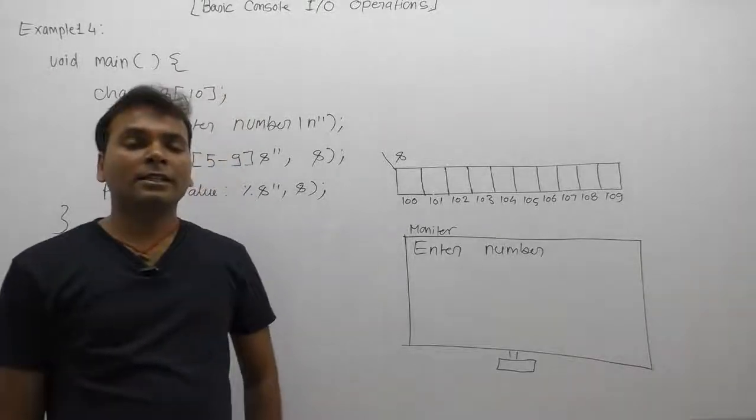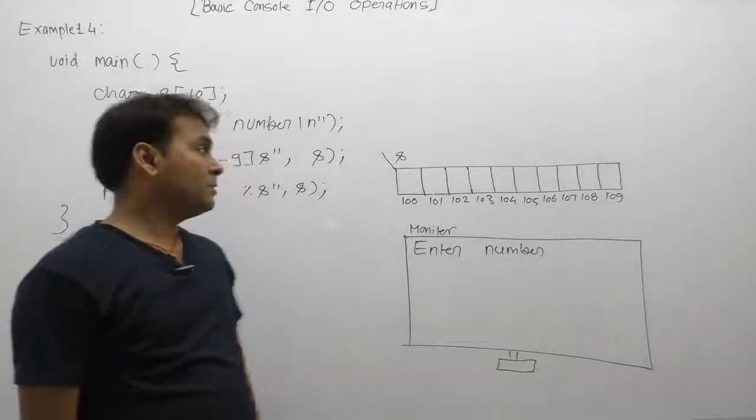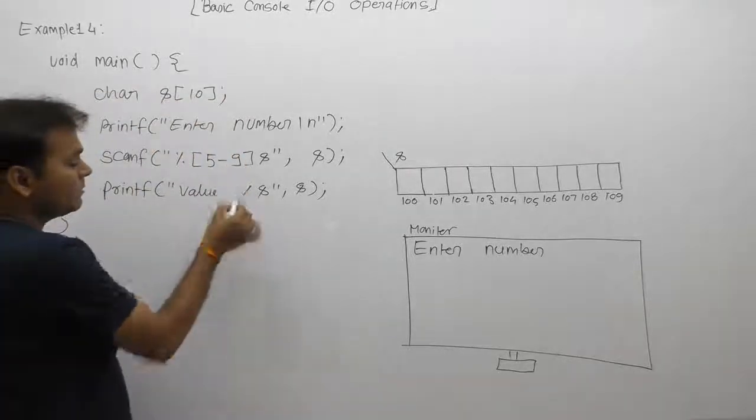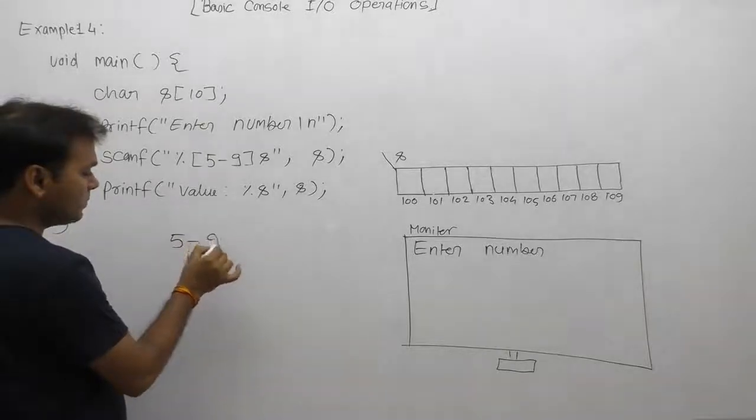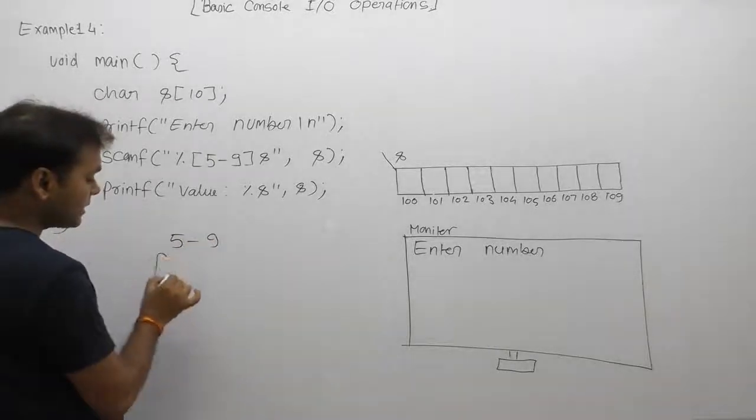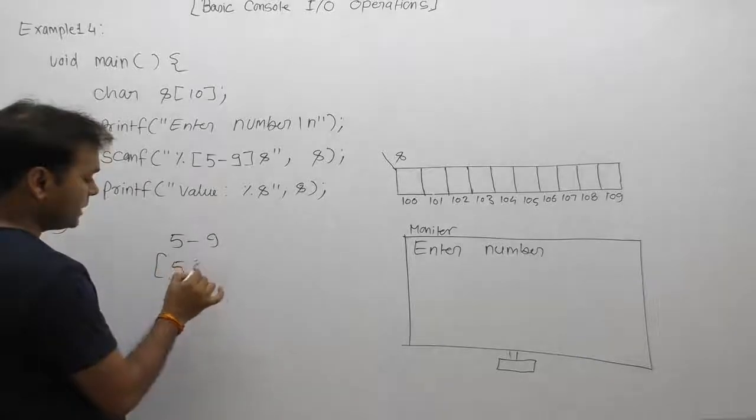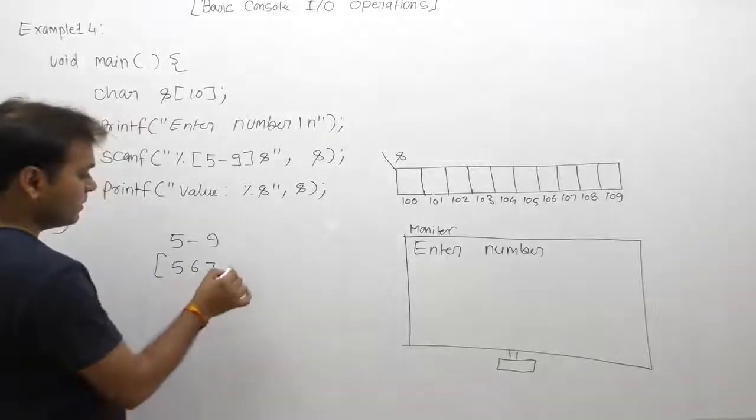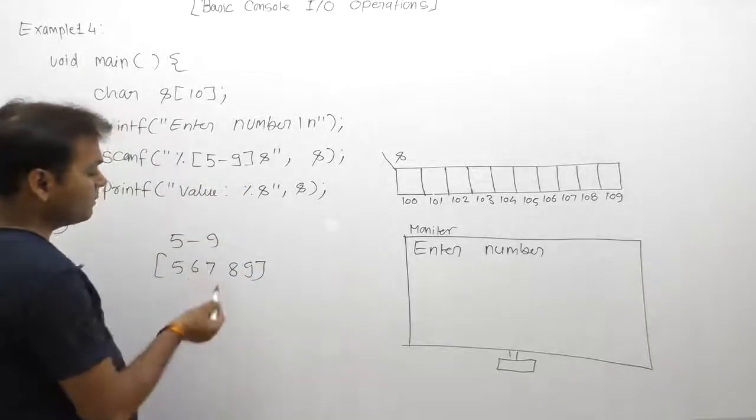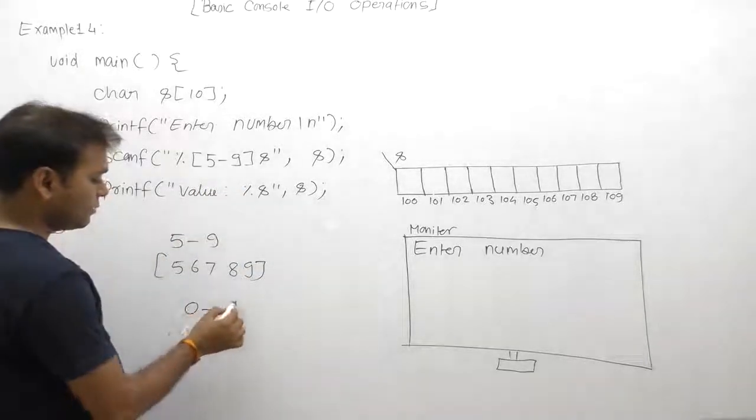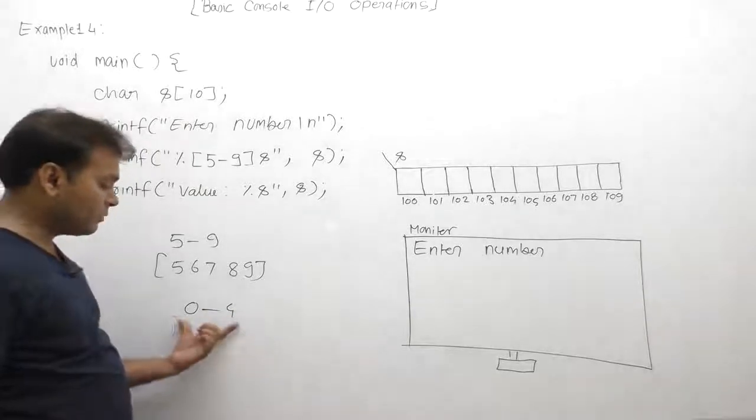Our next example demonstrates regular expressions for a given range 5 to 9. Here we are supplying the regular expression range 5 to 9, therefore valid digits are 5, 6, 7, 8, and 9. For this regular expression, we are not able to enter 0 to 4. If we try to enter 0 or 4, it will be rejected.